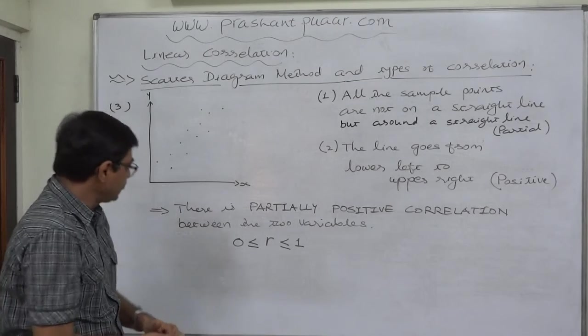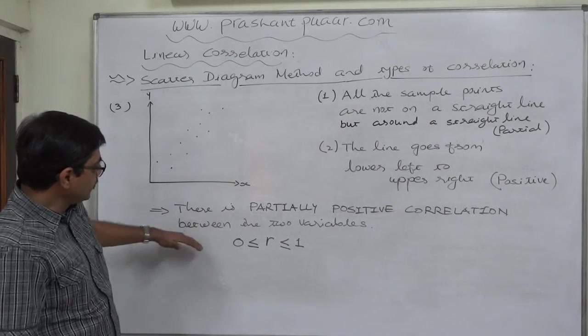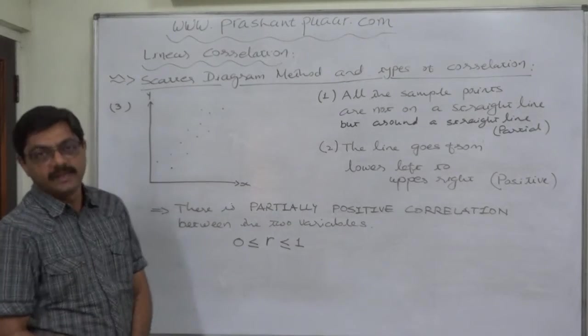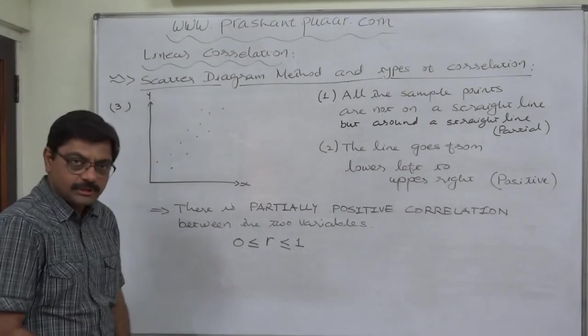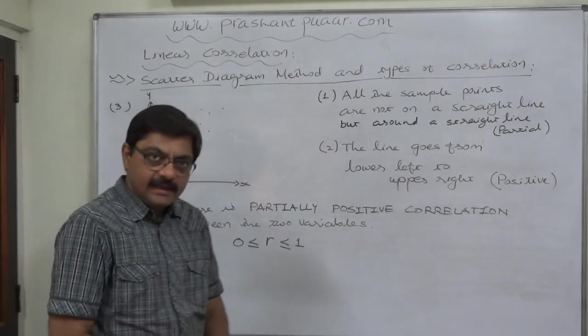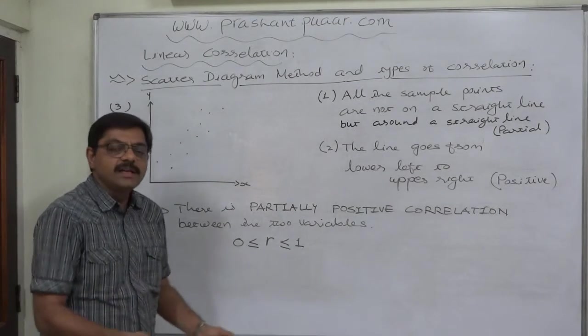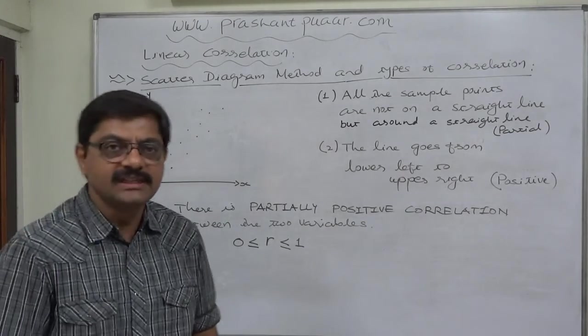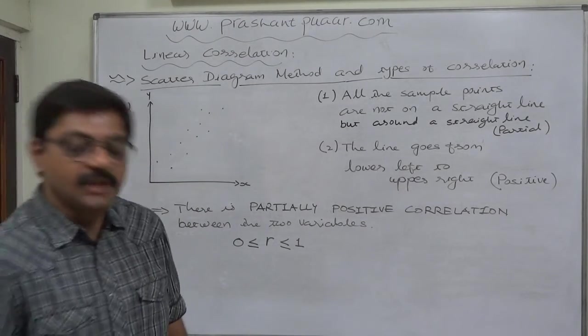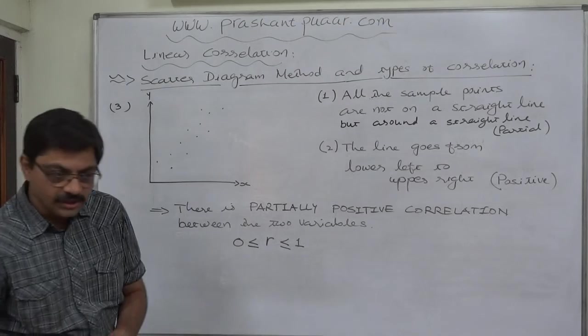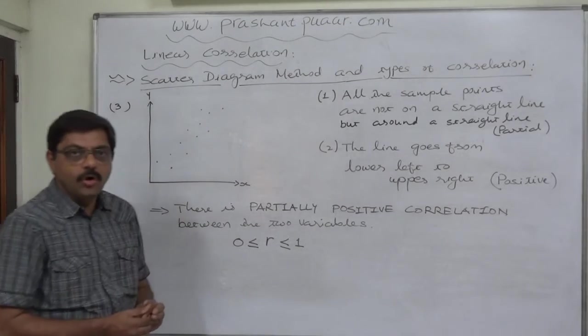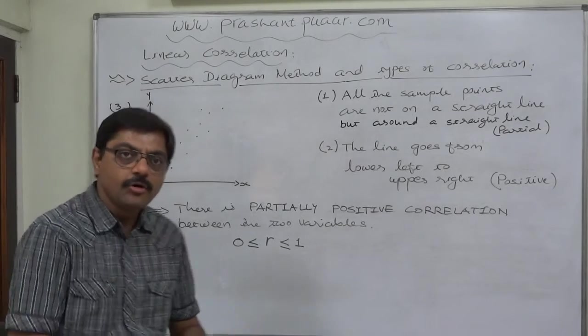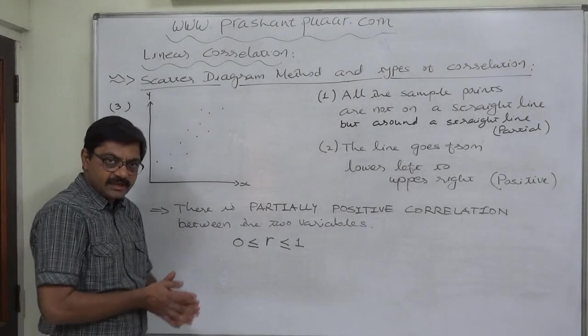Partially positive—what happens exactly? Not all the values of the two variables change in the same direction; some change in opposite directions. But the magnitude of the change in the same direction is greater than the magnitude of the change in opposite directions.